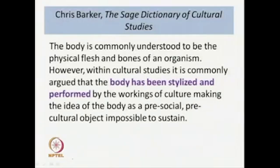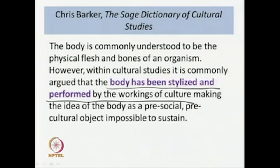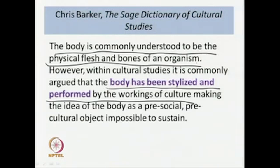An important point was the shift from the so-called pre-social organic body to the social body. We read from Chris Barker's Sage Dictionary of Cultural Studies, where he said the body has within cultural studies been stylized and performed by the workings of culture. Whereas the body was always understood as simply physical flesh and bones — going by the dualistic philosophy of Descartes or Cartesian dualism, where mind and body were seen as separate substances.